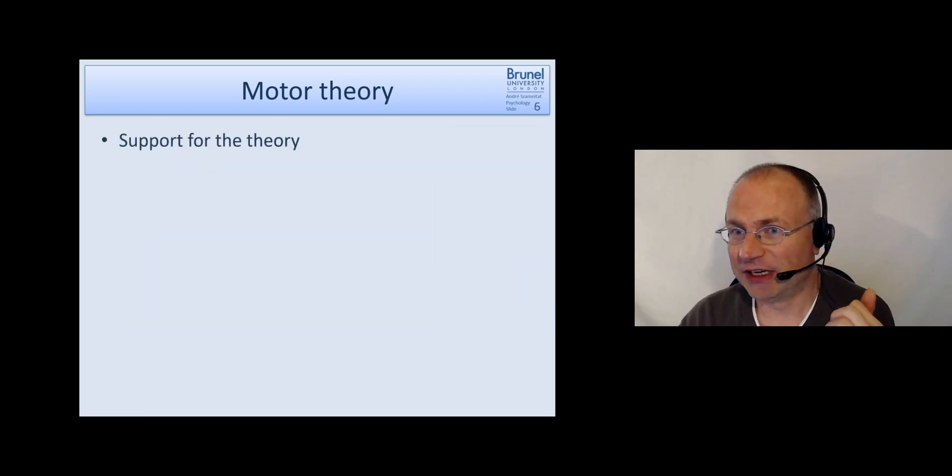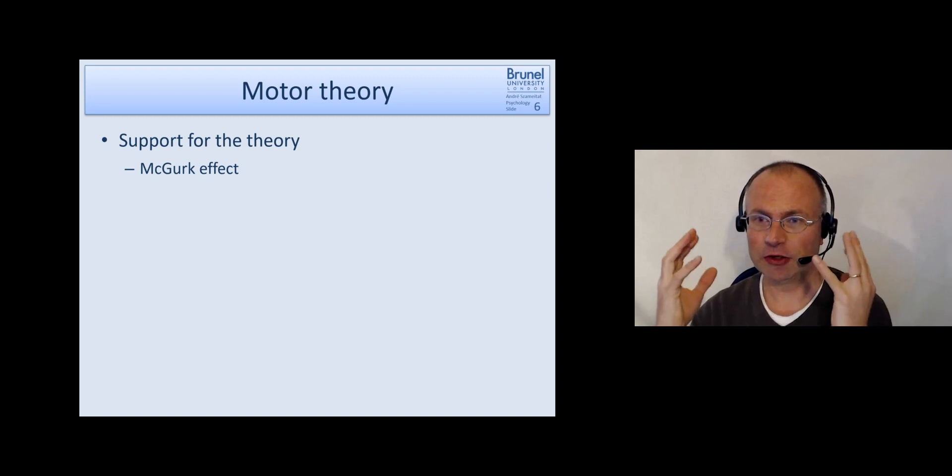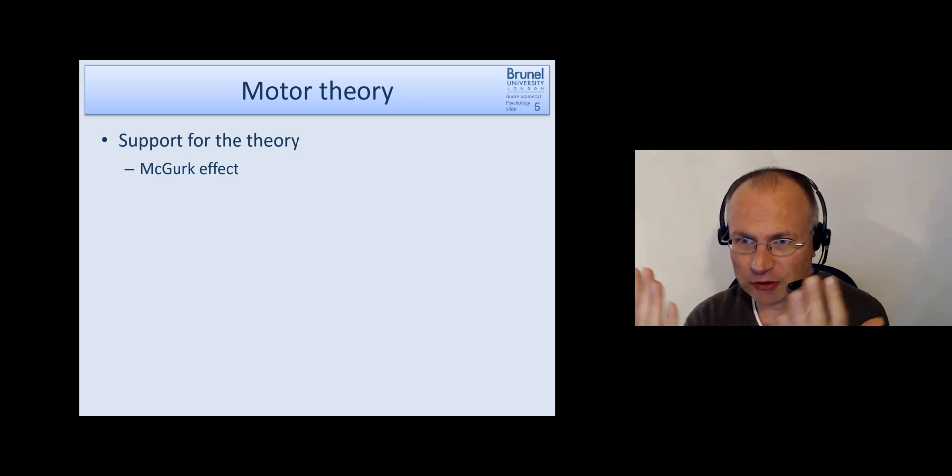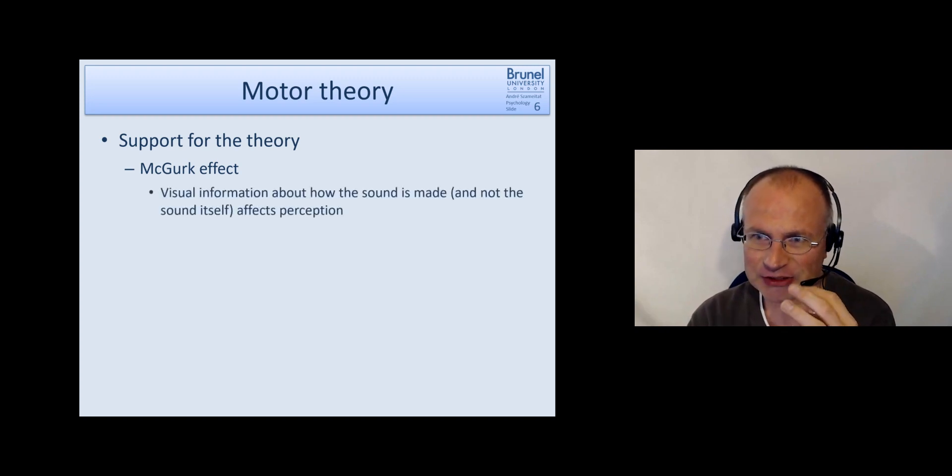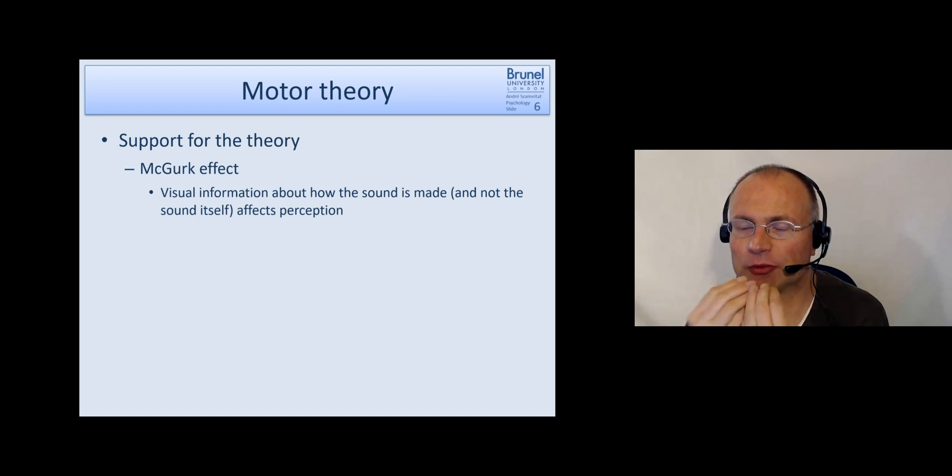What is there as support? So first of all it's the McGurk effect. Because we have seen that it's not only the auditory input but also the visual input which affects our perception. So the visual input, when we rephrase that, is information about how the sound is made, how the sound is produced in our vocal tract.